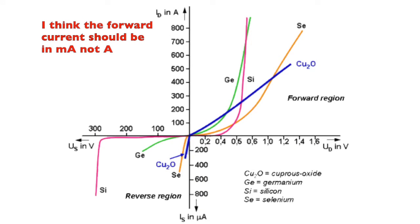Here are some typical current-voltage curves for various materials. Notice the different units on each quadrant: positive currents in amps, negative currents in microamps; positive voltages 0–2 V, negative voltages down to −300 V. Germanium and silicon show pretty typical curves. Selenium is used more as a dopant. Copper oxide, which you may not have realized, actually has semiconductor properties. While it isn't really used for semiconductor materials today, historically it was one of the first materials in which semiconductor properties were discovered and studied.